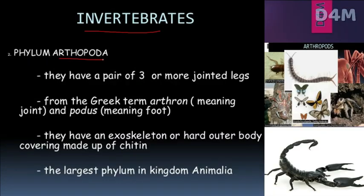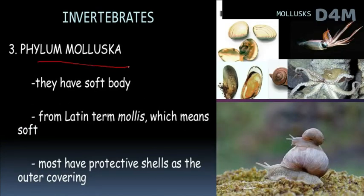The next invertebrate phylum is Arthropoda, the largest phylum in Kingdom Animalia. Their exoskeleton is made up of chitin. The next phylum is Mollusca, which have a soft body. They may have protective shells as an outer covering.